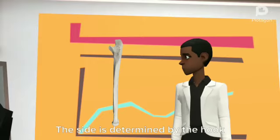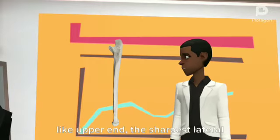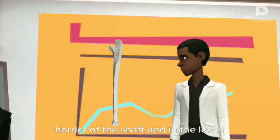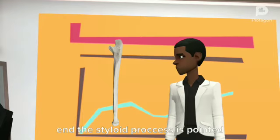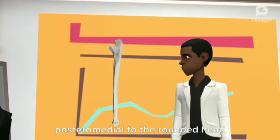This is the medial bone of forearm. The side is determined by the hook-like upper end, the sharpest lateral border of the shaft, and in the lower end the styloid process is pointed posteromedial to the rounded head of the ulna.